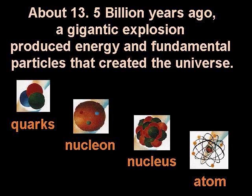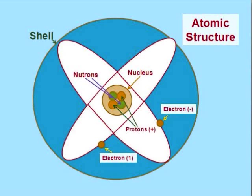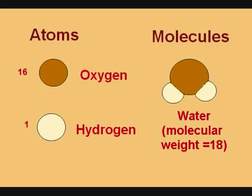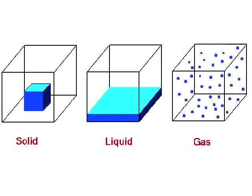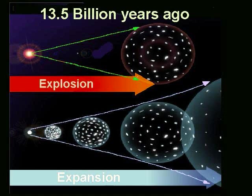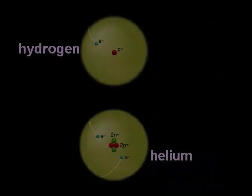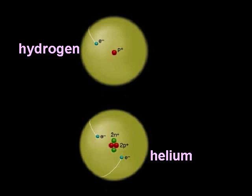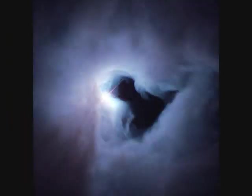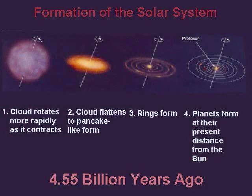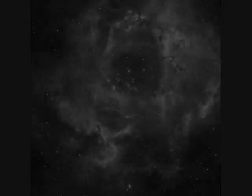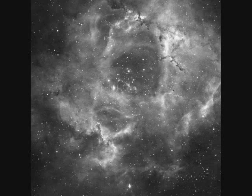Some of these quarks turned into hydrogen and helium atoms. Over millions of years, the gravitational attraction between hydrogen atoms created clouds of gas. These clouds began to spin, contracting to form stars. These collapsing hydrogen atoms started nuclear reactions.